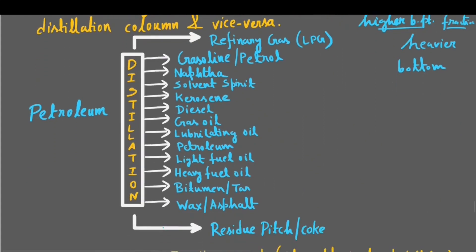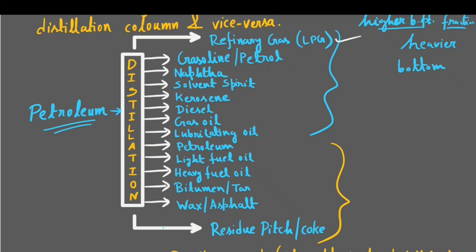Here is a complete diagram of the petroleum refining process, where crude petroleum is refined by a distillation column. At the top we get the lighter constituents, and at the bottom we get the heavier fractions or higher boiling point fractions. The lighter fractions include LPG or refinery gas, gasoline or petrol, naphtha, solvent spirit, kerosene, diesel, gas oil, etc.